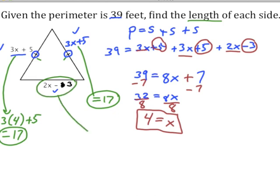Then this last side: 2x minus 3. So 2 times the quantity 4 minus 3. 2 times 4 is 8, minus 3, which gives us a side length of 5. We were working in feet, so each of these is 17 feet, 17 feet, and 5 feet.